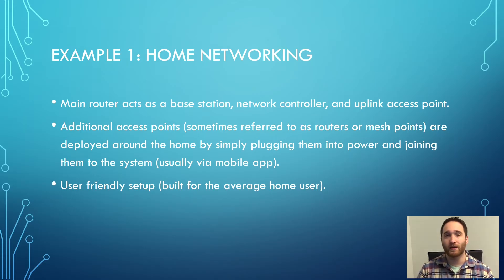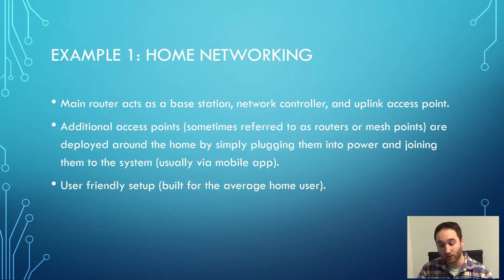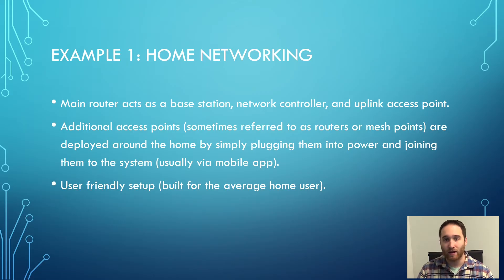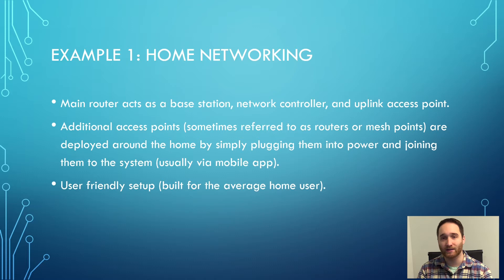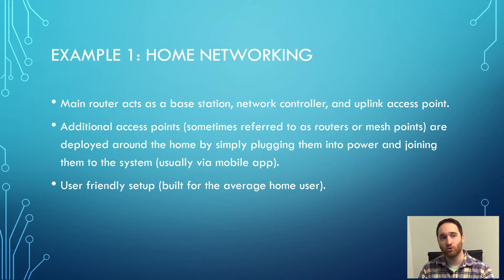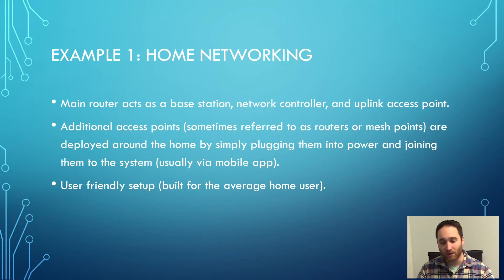In a home networking mesh Wi-Fi system, you'll generally have a main router acting as a base station, a network controller, and an uplink access point. The main router replaces the router you probably already have, acting as the center — the base station — for the entire mesh networking system. As network controller, it's responsible for propagating any settings you apply out to the different access points in your mesh Wi-Fi system.